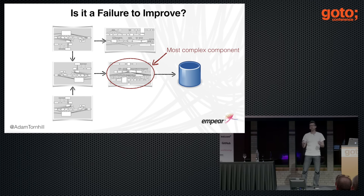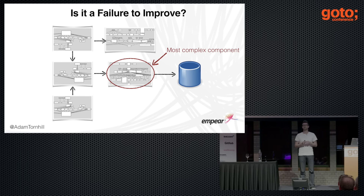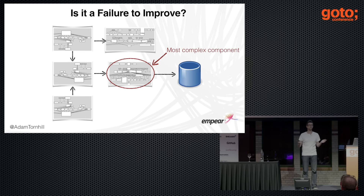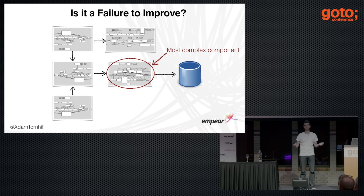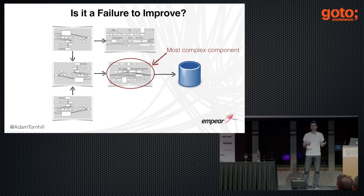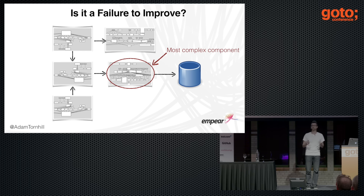What do you think happened to our productivity? What do you think happened to our quality measured in the number of bugs? Absolutely nothing. There was no difference, and this was quite depressing, because it means we not only wasted two months improving something that didn't matter — it also means we missed an opportunity to improve something that could have made a difference.